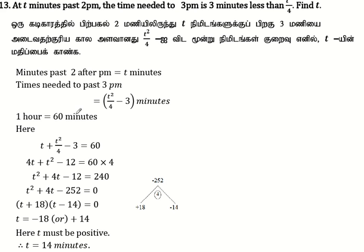One hour is 60 minutes. When you add the time past 2pm plus the time needed to reach 3pm, you will get 60 minutes. So t plus t² divided by 4 minus 3 equals 60.